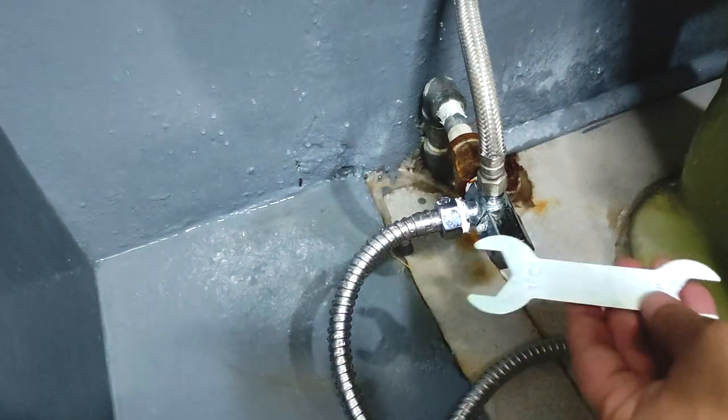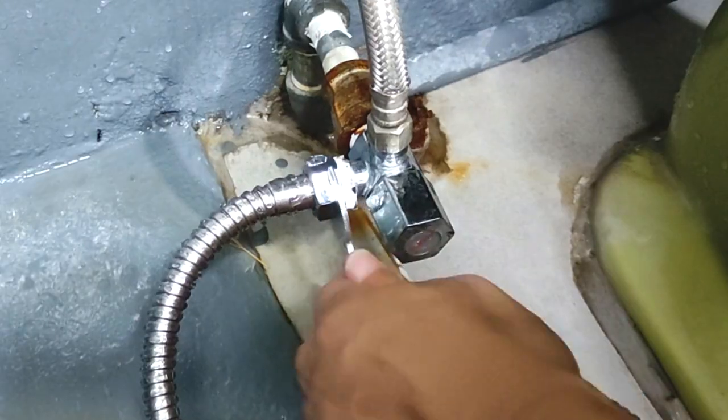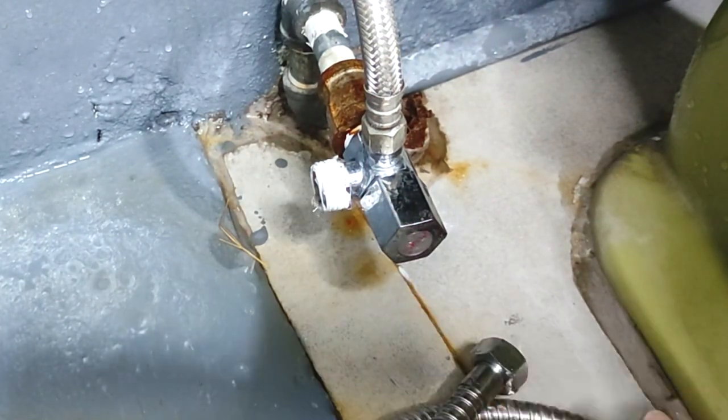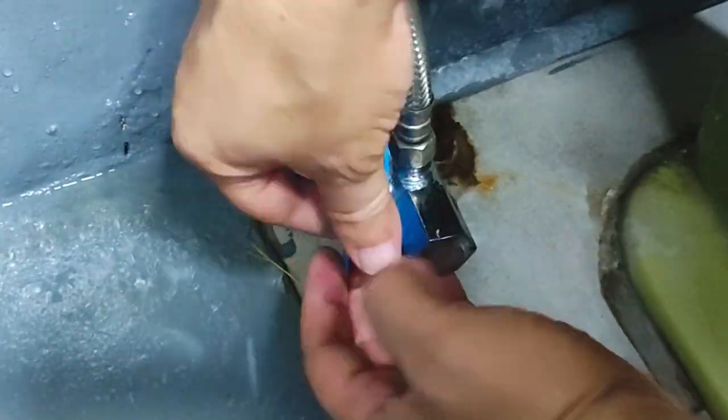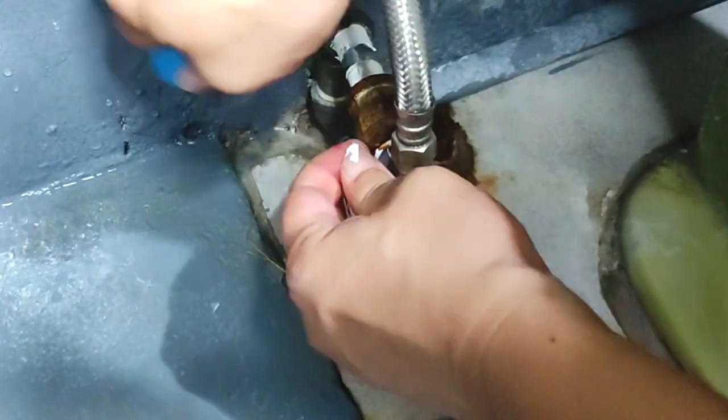And I'll use this flat wrench to loosen the flexible hose of our bidet spray. Then we'll wrap some new Teflon tape around the thread.